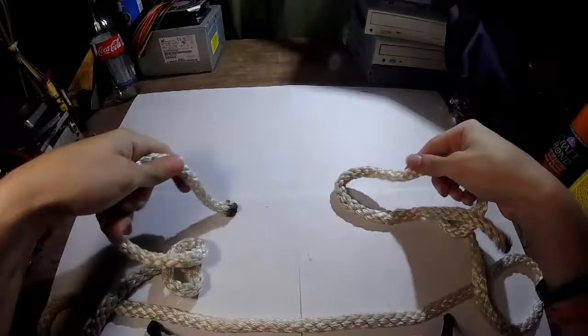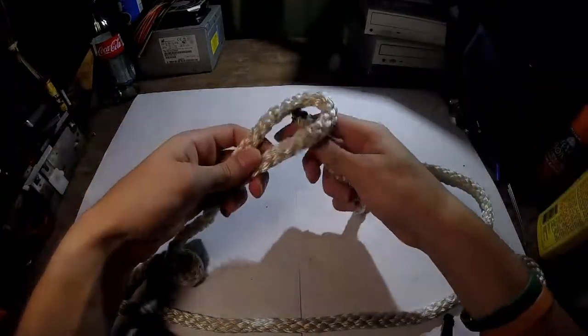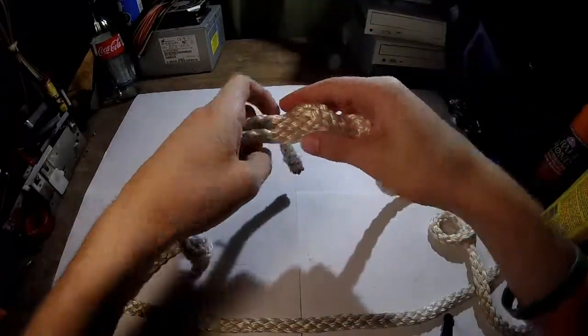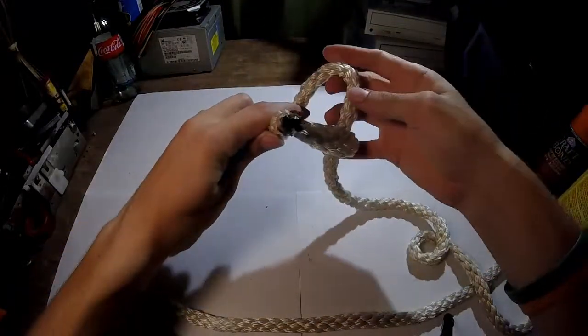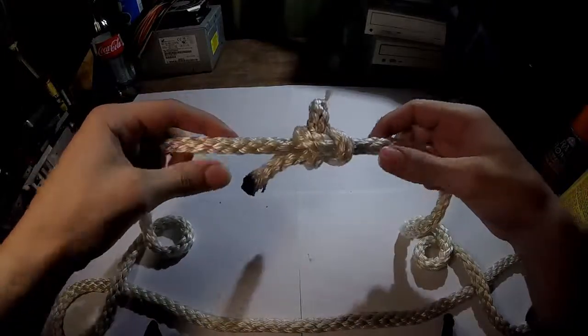I'll tie it one more time. Loop, thinner end, up, wrap it around, make a loop, pull it through. There you have it, the sheet bend.